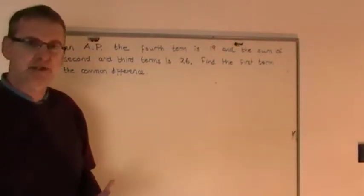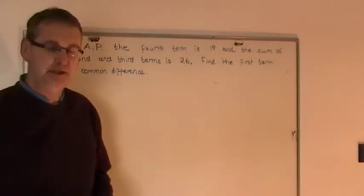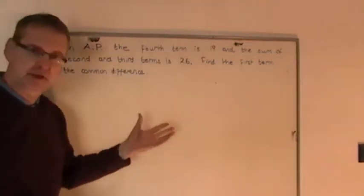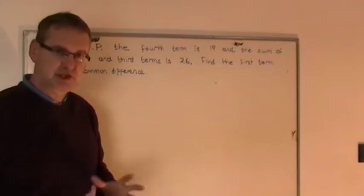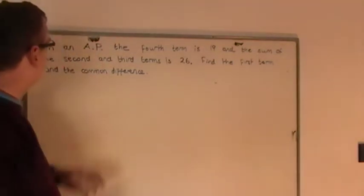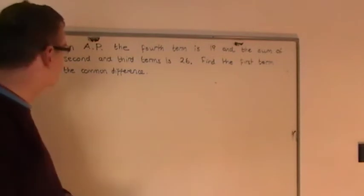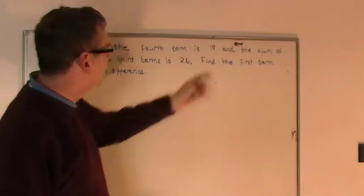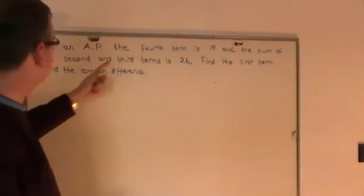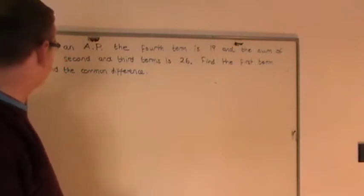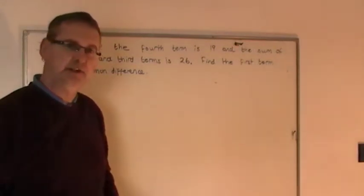In this example we've got an arithmetic progression or arithmetic series question again. Let me read out the question because this doesn't refer to any worksheet or any past paper. It says the following: In an AP, an arithmetic series, the fourth term is 19 and the sum of the second and third terms is 26. Find the first term and the common difference.